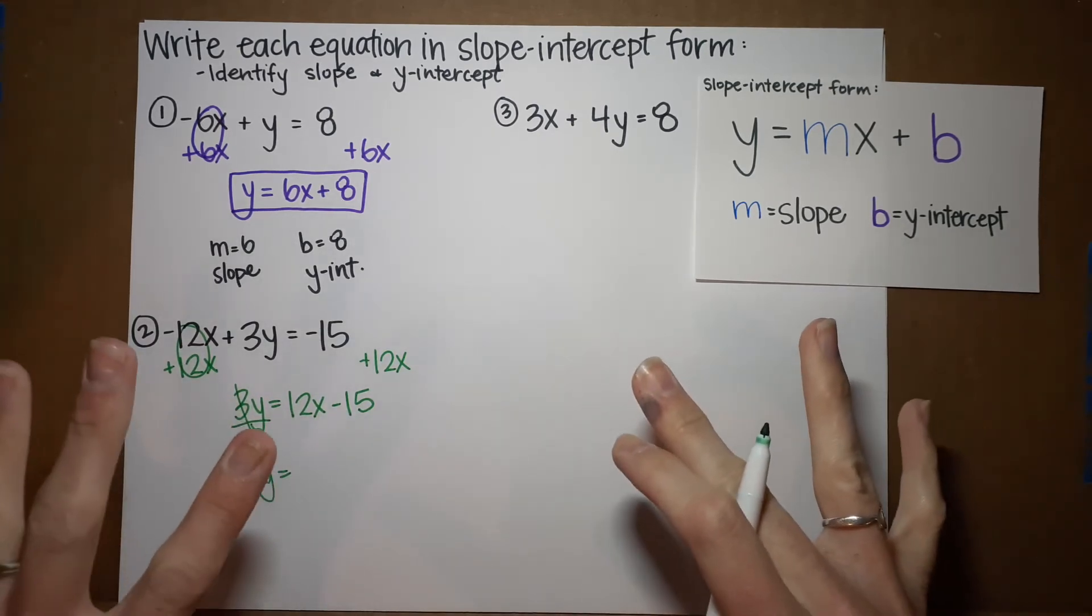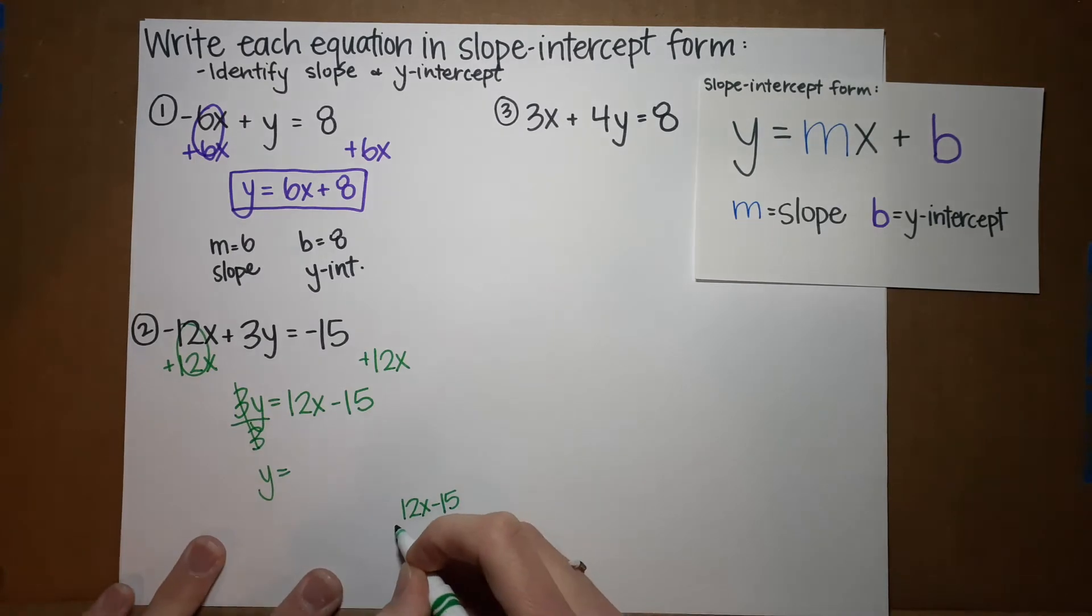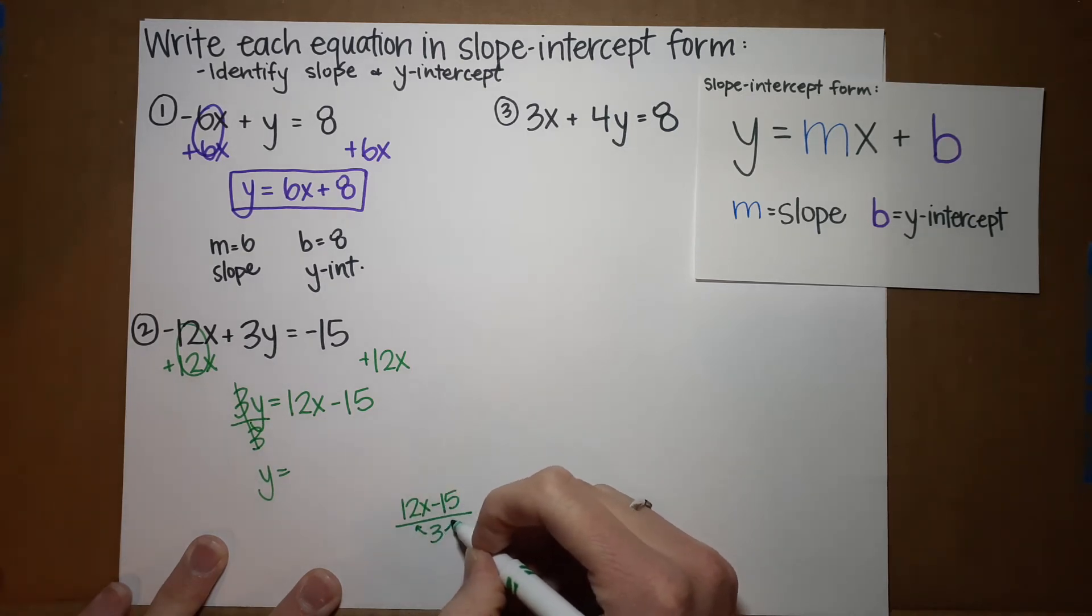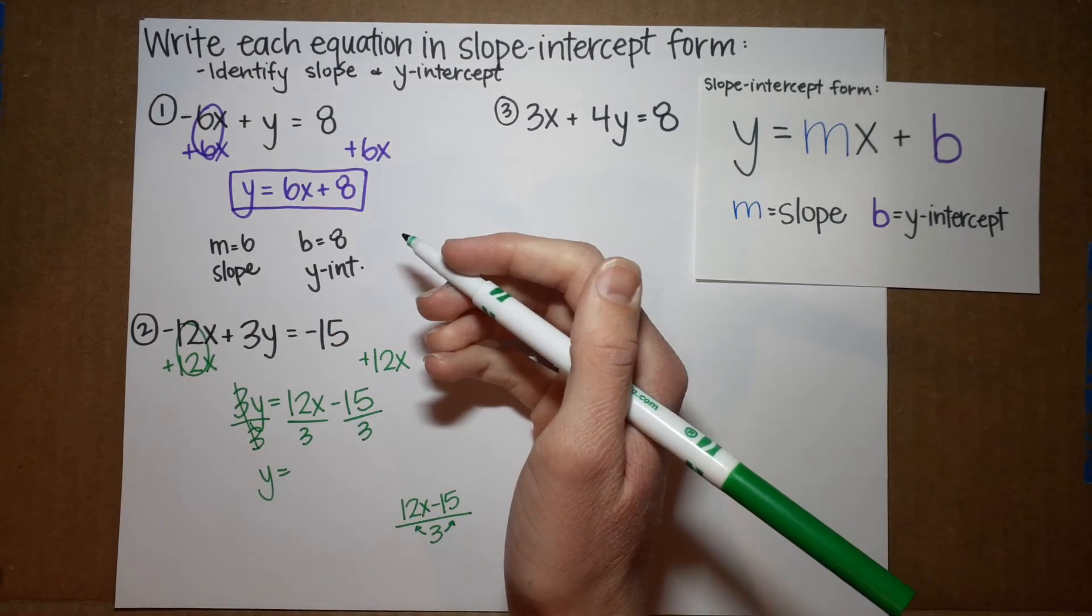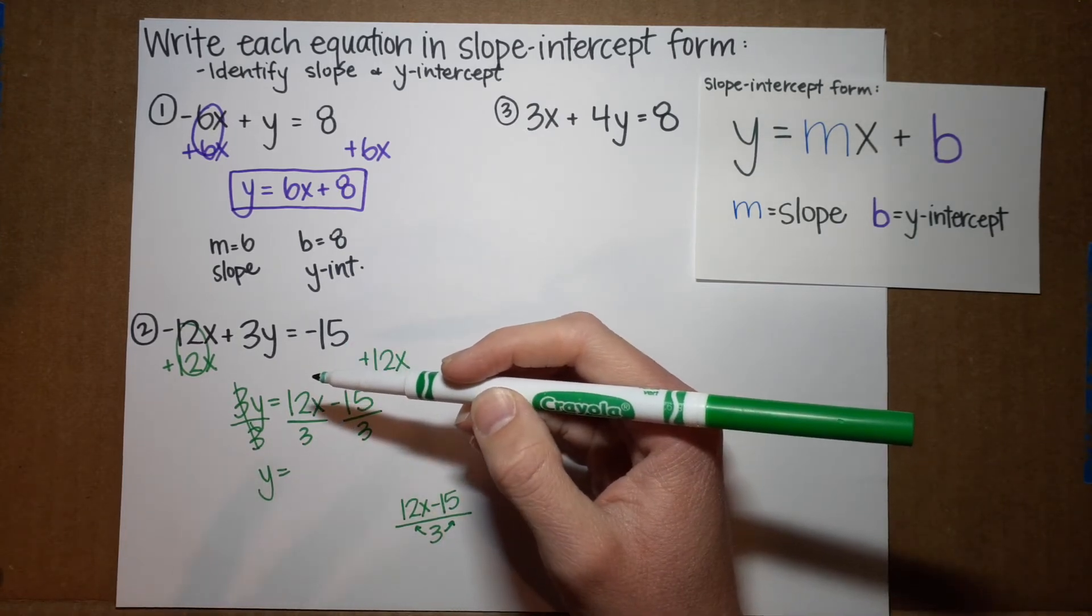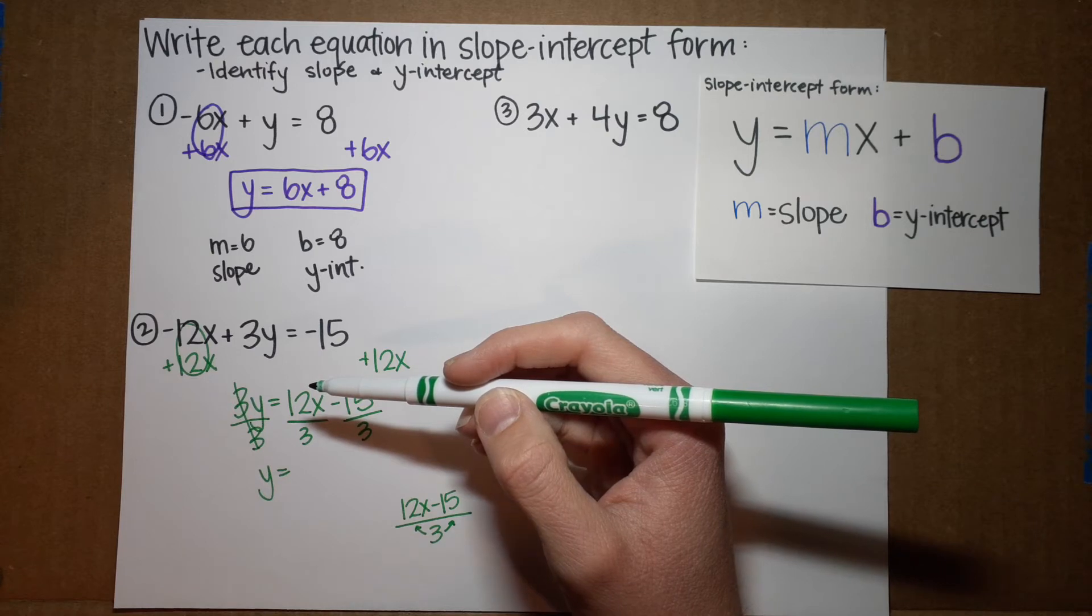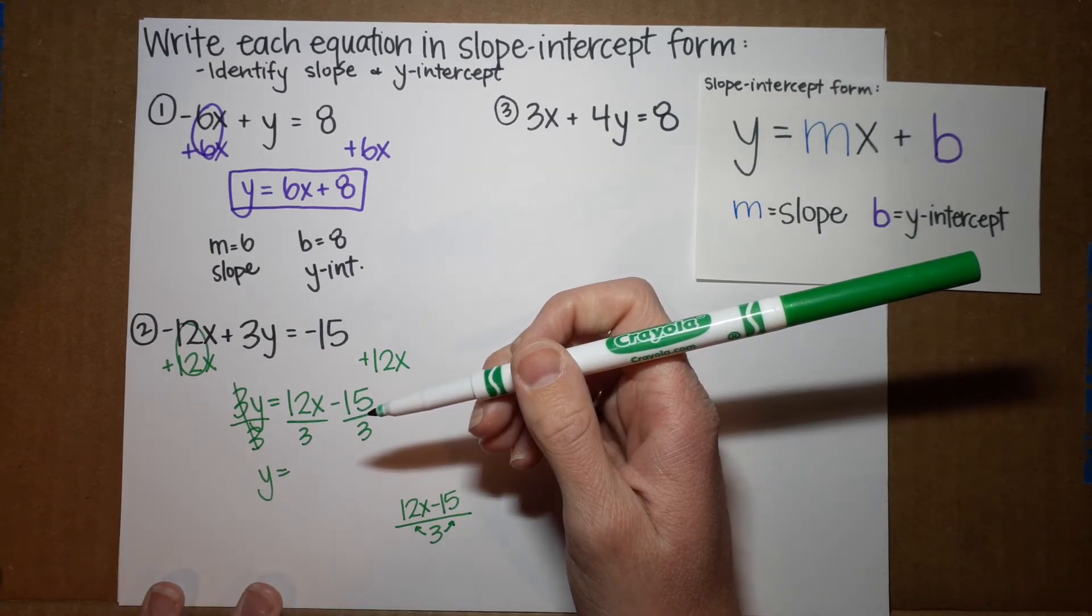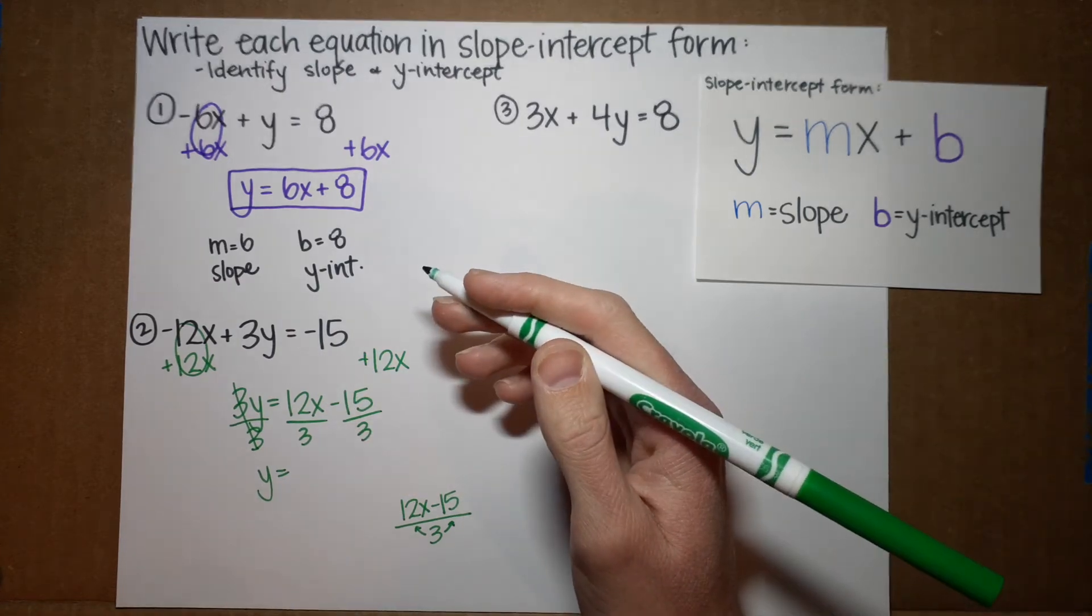Now, there's two ways you might kind of visually see this. We have 12x minus 15. Some people will just divide that whole thing by 3, which is great. Just what you have to remember is that both of these numbers are being divided by 3. That gets distributed to both of them. Personally, I just like to write it under each one. I don't know. My brain just likes to see it that way. So, now, we've got 12x divided by 3. You might be thinking, oh, those aren't like terms. You are correct. We can multiply and divide terms that are not alike.